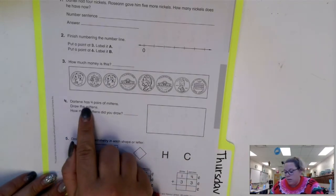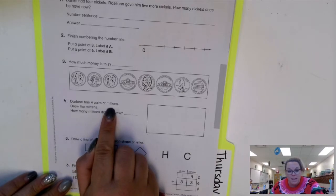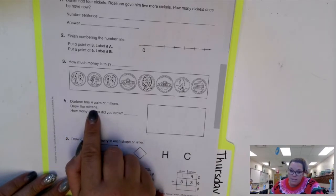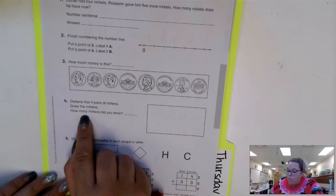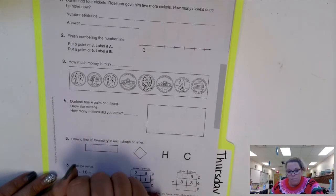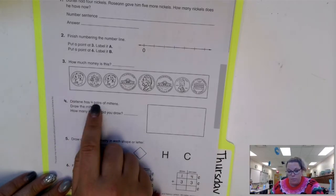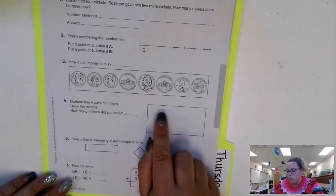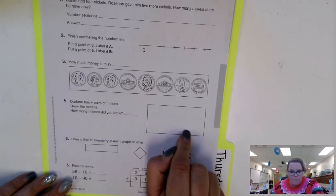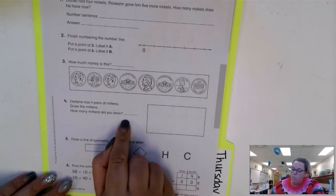Number four. Darlene has four pairs of mittens. Draw the mittens. How many mittens did you draw? Remember that you need four pairs, not four mittens. Four pairs. So draw four pairs of mittens. How many mittens did you draw?